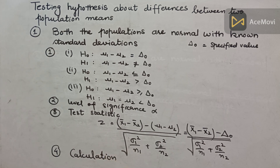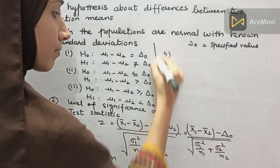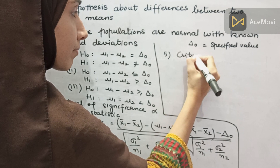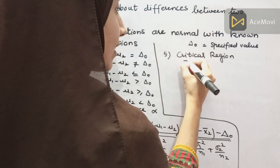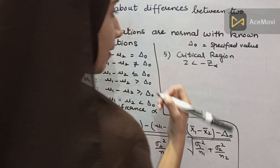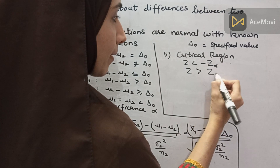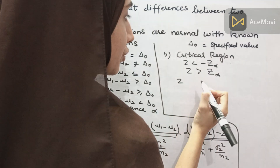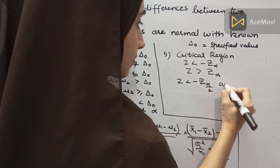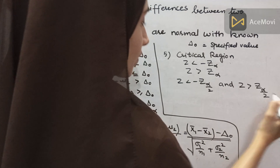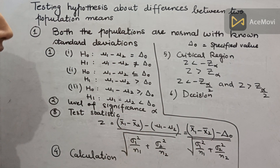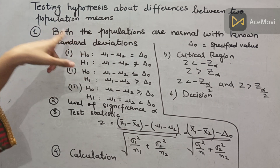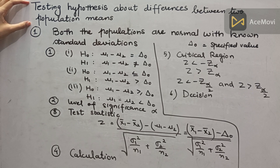The fourth step is calculation, and the fifth step is selecting the critical region. For a two-tailed test, we write the rejection region accordingly. The sixth step is the decision. These are basically the steps we will use when testing a hypothesis about the difference between two population means.